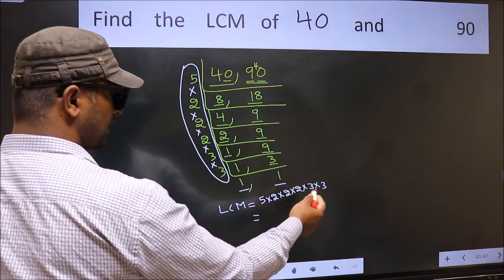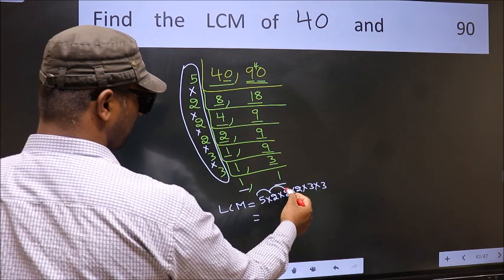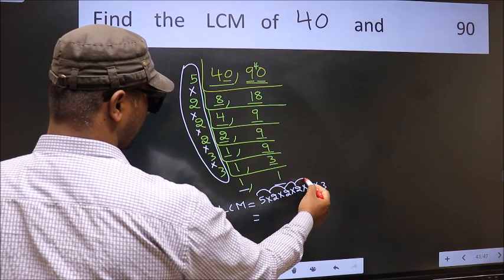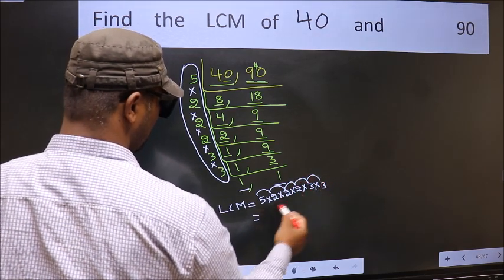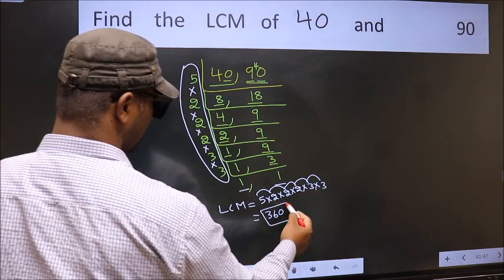So let us multiply these numbers. 5 into 2 is 10, into 2 is 20, into 2 is 40, into 3 is 120, into 3 is 360. 360 is our LCM.